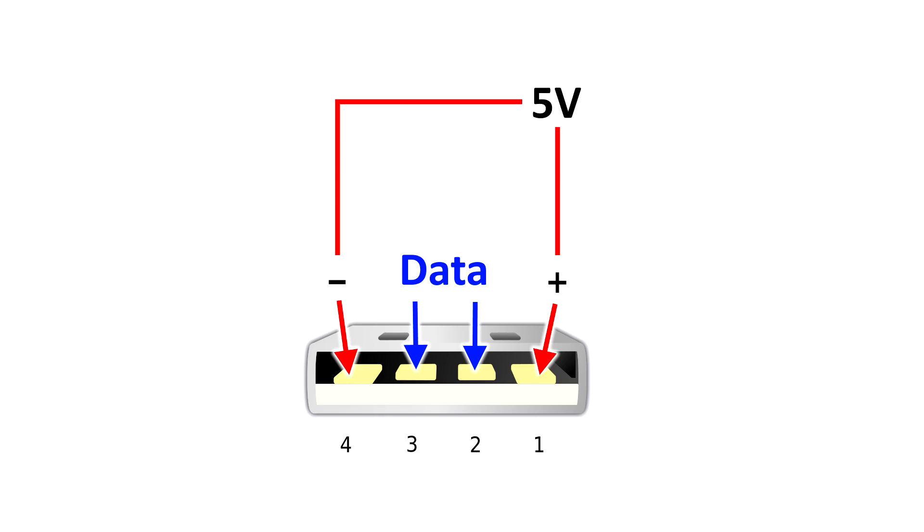Pin number one is positive. Pin number four is essentially ground. There you go. You've got your 5 volts. That's how it charges. And the center two pins are for sending and receiving data.